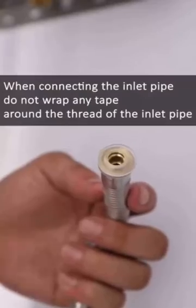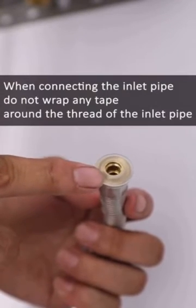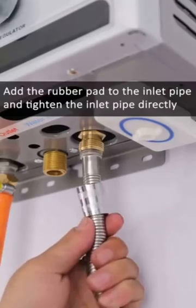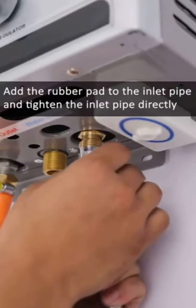When connecting the inlet pipe, do not rub any tape off the thread of the inlet pipe. Add the rubber pad to the inlet pipe and tighten it.